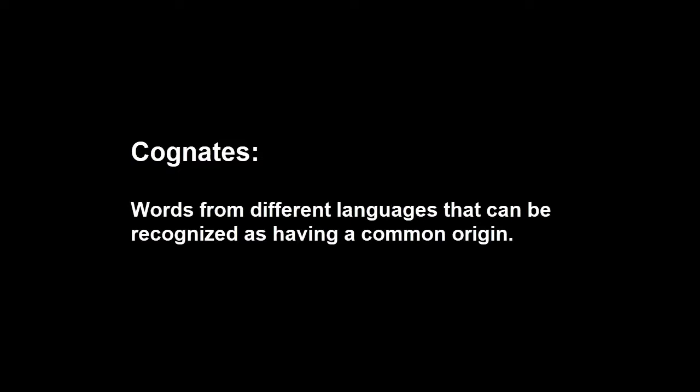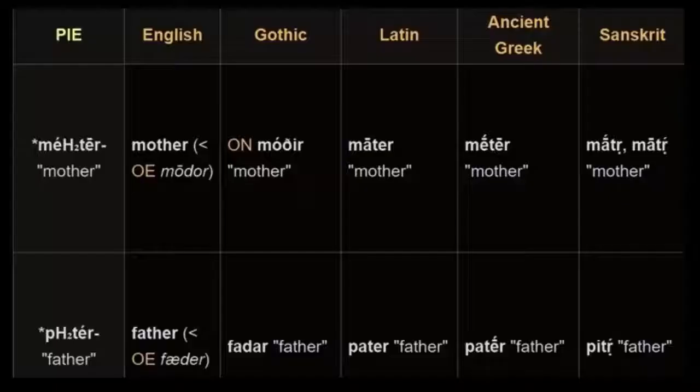From this observation, Jones proposed the theory that all of these languages derive from a common ancestor language. Even though no actually existing evidence remained of this ancestor language, its existence could be identified by the existence of cognate words and grammatical structures in different languages that were known. This projected ancestor language is called Proto-Indo-European. Here's a chart demonstrating the similarities among very common, ordinary, everyday words in these different languages. The heading PIE in the left-hand column stands for Proto-Indo-European.